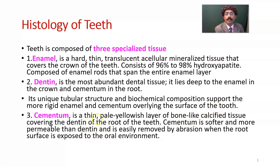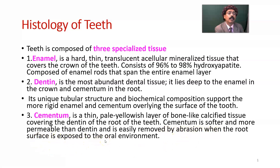Cementum is a thin, pale yellowish layer of bone-like calcified tissue covering the dentin of the root of the teeth. Cementum is softer and more permeable than dentin and is easily removed by abrasion when the root surface is exposed to the oral environment. In receding teeth in older persons, cementum is lost very frequently.